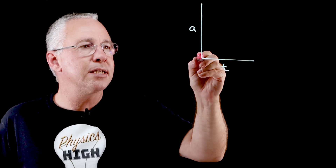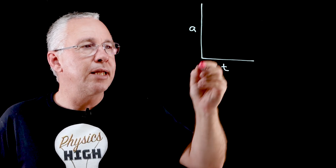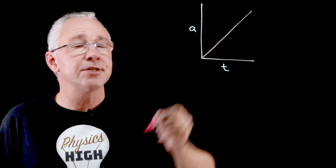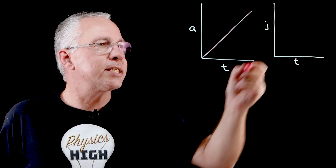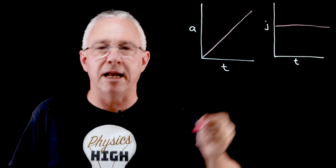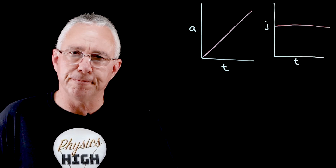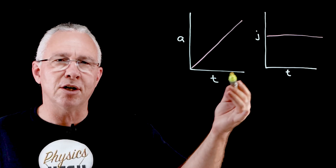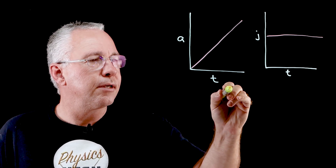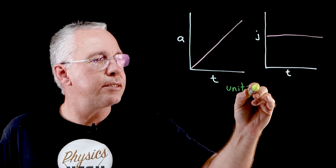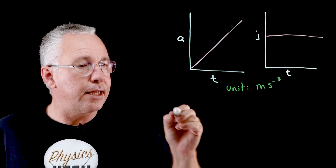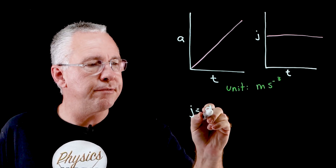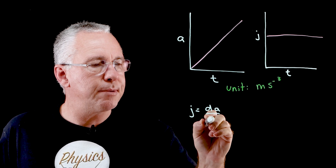Let's look at it from a graphical perspective. We have an acceleration that can be, for example, increasing like so. And what about the jerk graph? Well, in this case, I have a constant value for the jerk or the jolt. As a result, because it's the rate of change of acceleration, the unit is metres per second cubed.